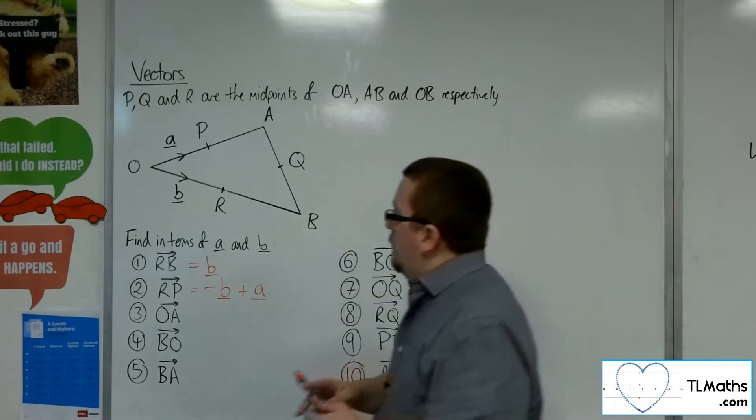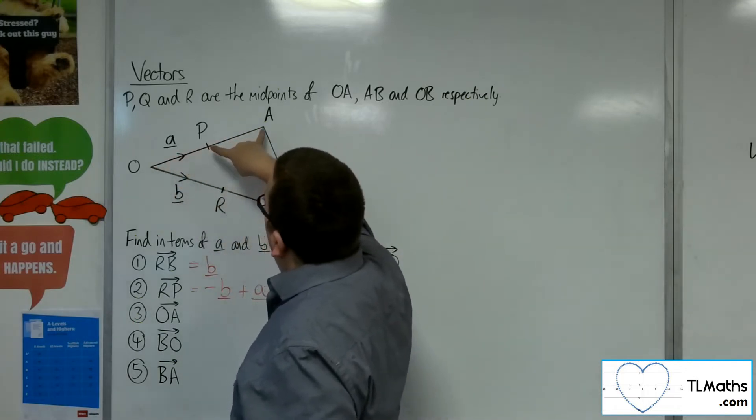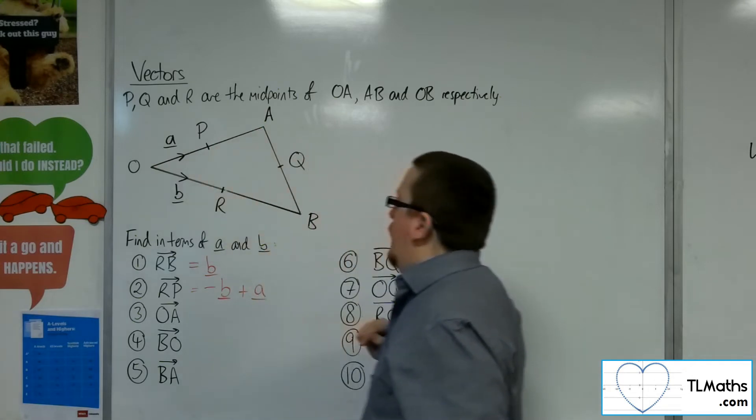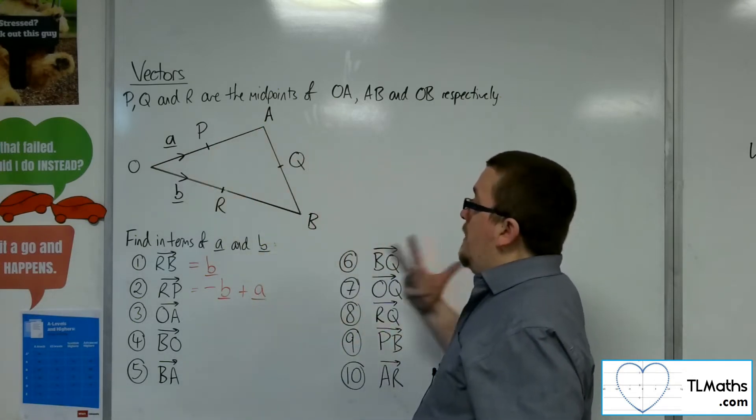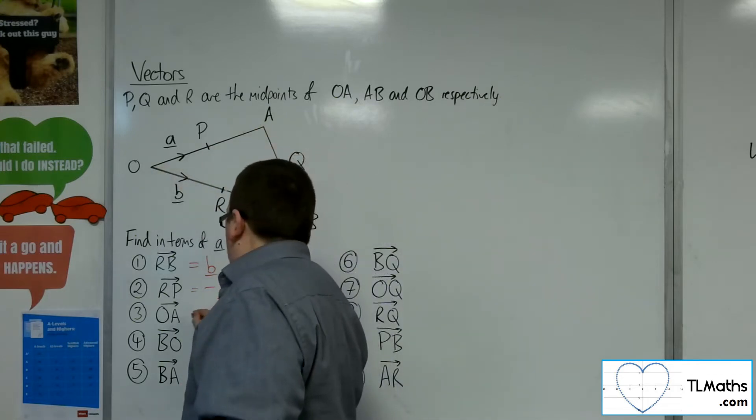How about from O to A? Well, if I know how to get from O to P, that's A, then P to A will just be another A, won't it? Because that's the same. So it's A plus another A. So that would be 2A.